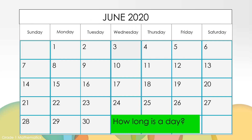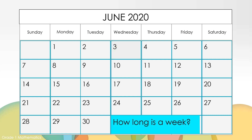I wonder, how long is a day? A day is 24 hours, like today, June 3rd. How long is a week? This teal color shows a week. A week is seven days.